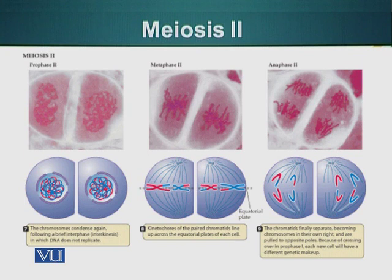Remember, we talked about this in meiosis 1 — sister chromatids exchange parts with each other in a process called crossing over, when two homologous chromosomes are sitting next to each other, lying next to each other in the tetrad. Now, in prophase of meiosis 2, these chromosomes have condensed again.